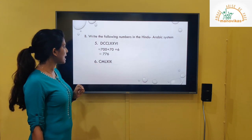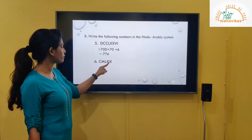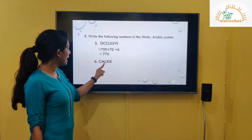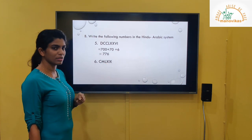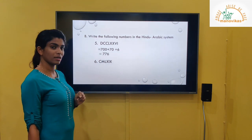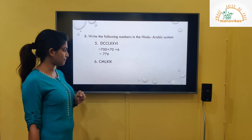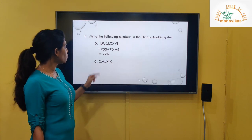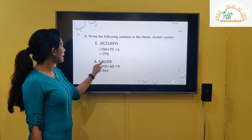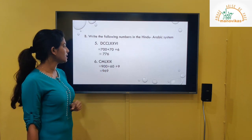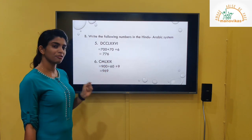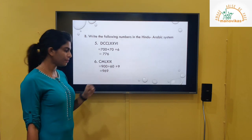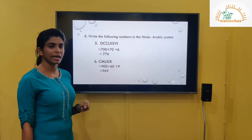Sixth: CMLXIX. Put IX in the ones place and LX in the tens place. CM will be in the hundreds place. CM gives 900. LX: 50 plus 10 gives 60. IX gives 9. After addition we get 969.